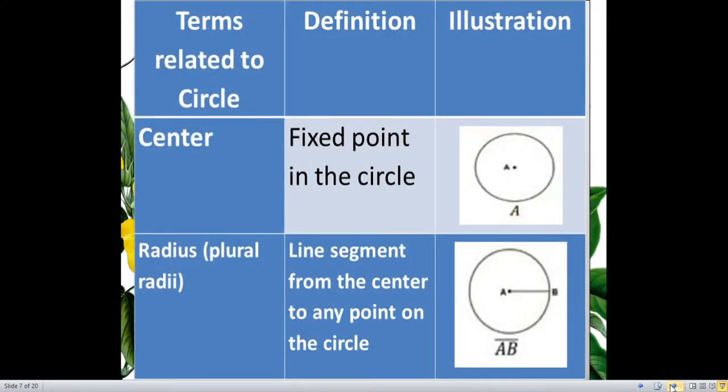So here are the terms related to circle. Let us start with center, then the definition of it, and you will find out the illustration on the very right corner of this table. So center is a fixed point in the circle. So here is our center, the point A. And your circle is usually named by our center. So that circle will be named now as circle A.